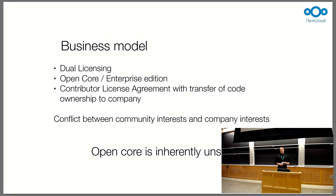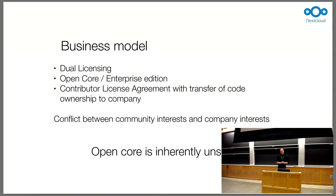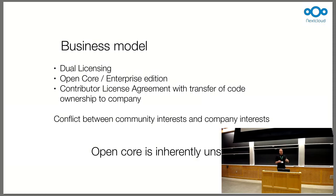Let's talk about the business model that was chosen at the time. First, dual licensing: OwnCloud was available under the AGPL license, which means if you change the software you have to release it under the same license. But if a company didn't want to do that, OwnCloud said, no problem — just pay us some money and you get the software under a different license where you don't have to release your changes. So there was this dual licensing business model.